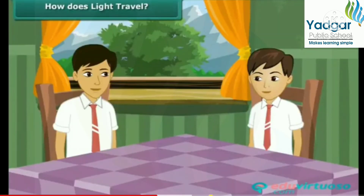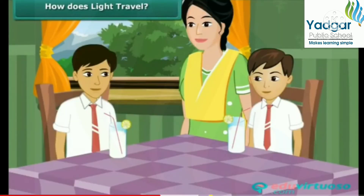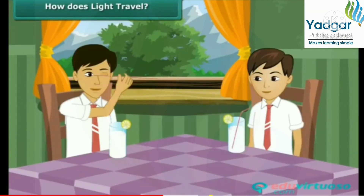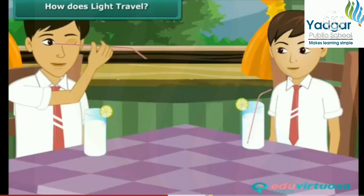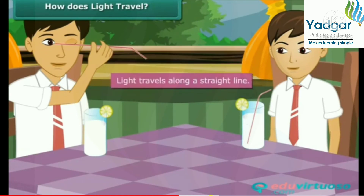You and your brother Ashish have just returned from school. Your mother gives both of you lemonade to drink. Your mischievous brother picks a straw out from the glass and tries to look at you through it. After a while the straw bends. Now when Ashish tries to look at you through it, he is unsuccessful. Does this activity prove something? Yes, it does. It proves that light travels along a straight line.